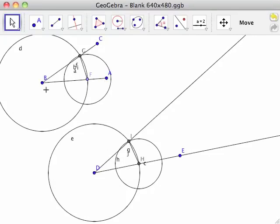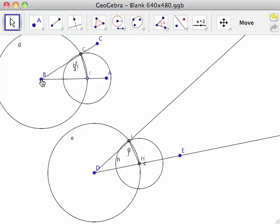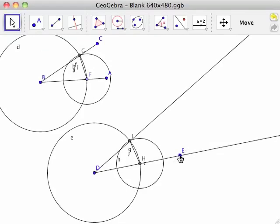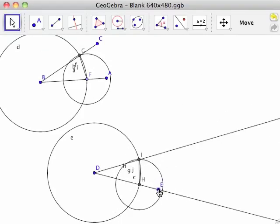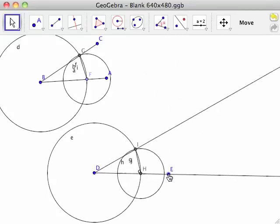Moving point B also changes angle B. Moving point D and E does not change the measure of angle D because angle D is a copy of angle B.